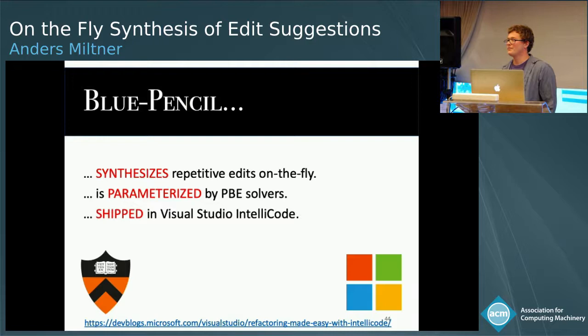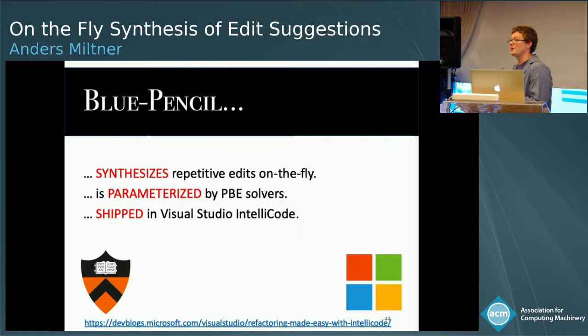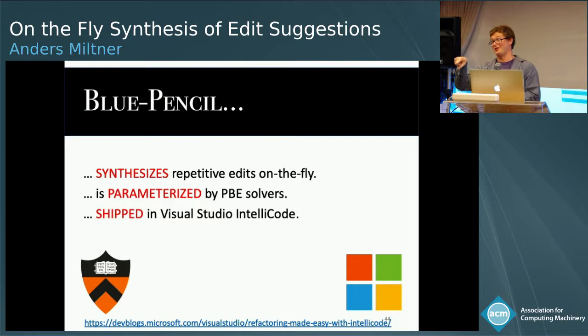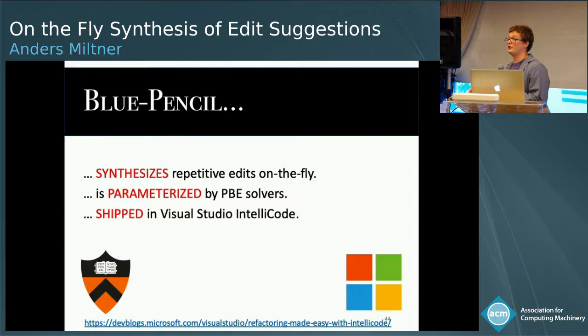Question: When you suggest edits, do you have any notion of confidence to handle false positives — can you say this edit is very likely whereas another is not? Answer: Right now there's a naive notion of confidence using ranking by the PBE solver, but there are more things you could use. If an edit has a high ranking and someone has already clicked to apply it, you probably have good confidence it'll be used elsewhere. Or if that edit is present in many different locations on the graph, that might also make it more desirable.